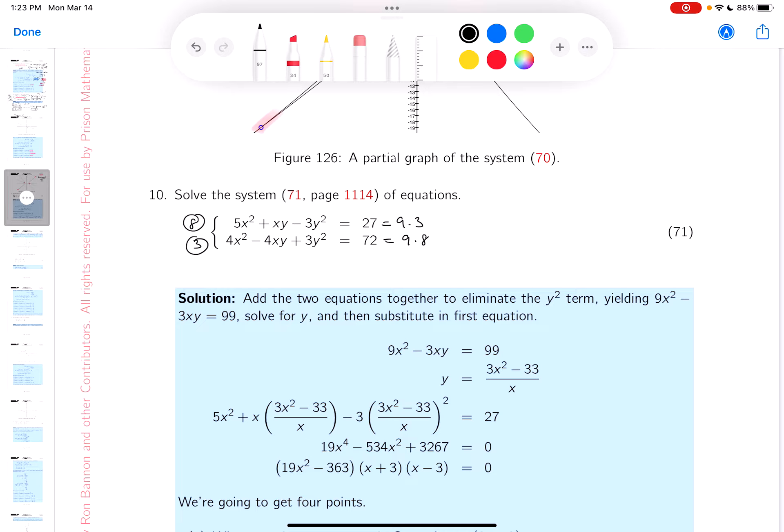Alright, that would give you 9, 3, 8. Now let me get my eraser out. And I'm going to erase this over here. I'm not going to do every step, by the way.